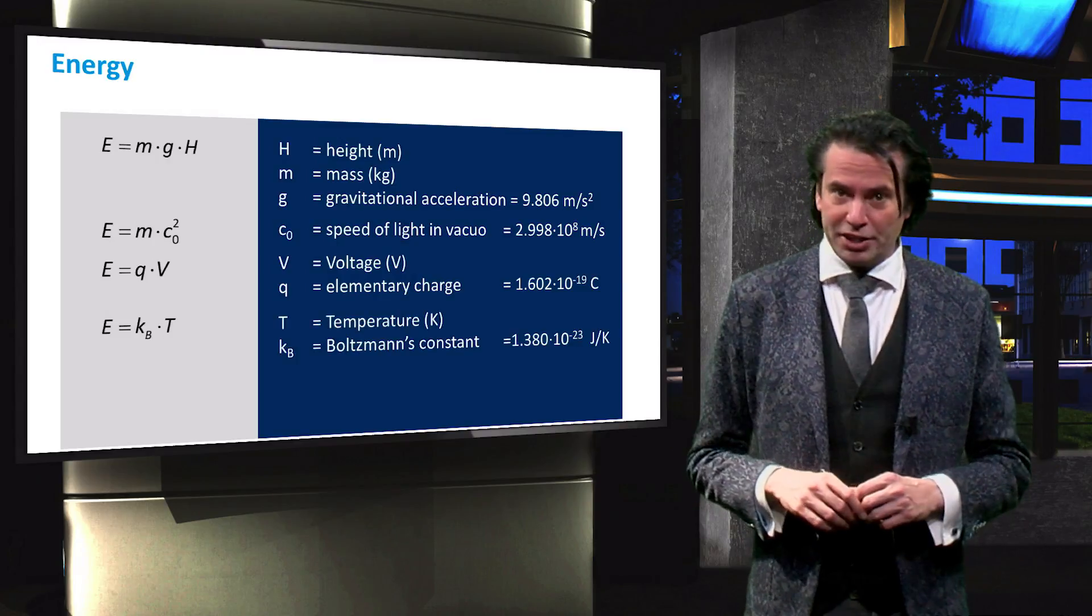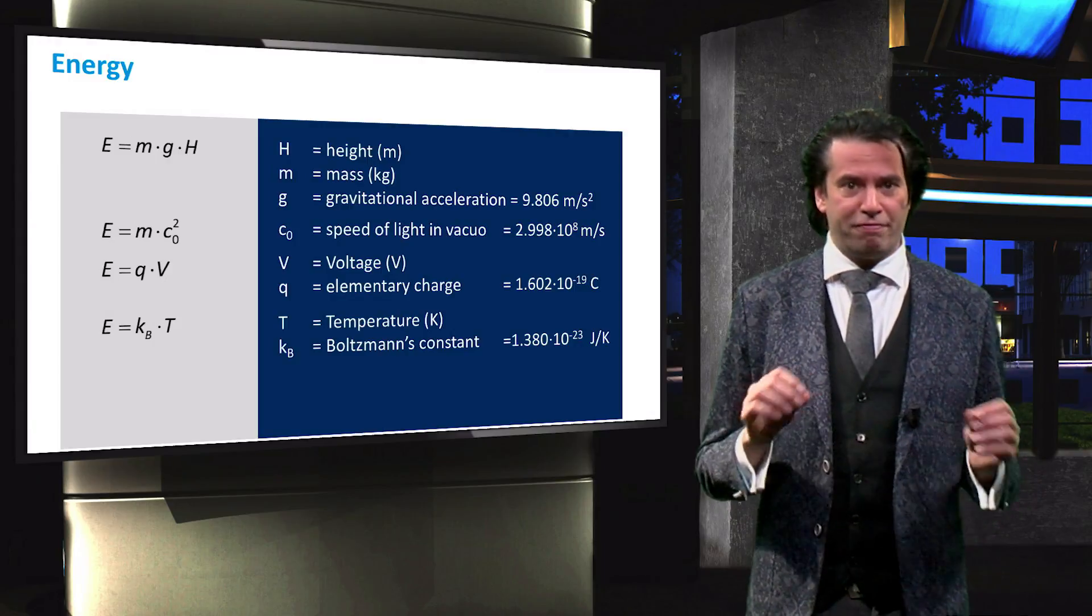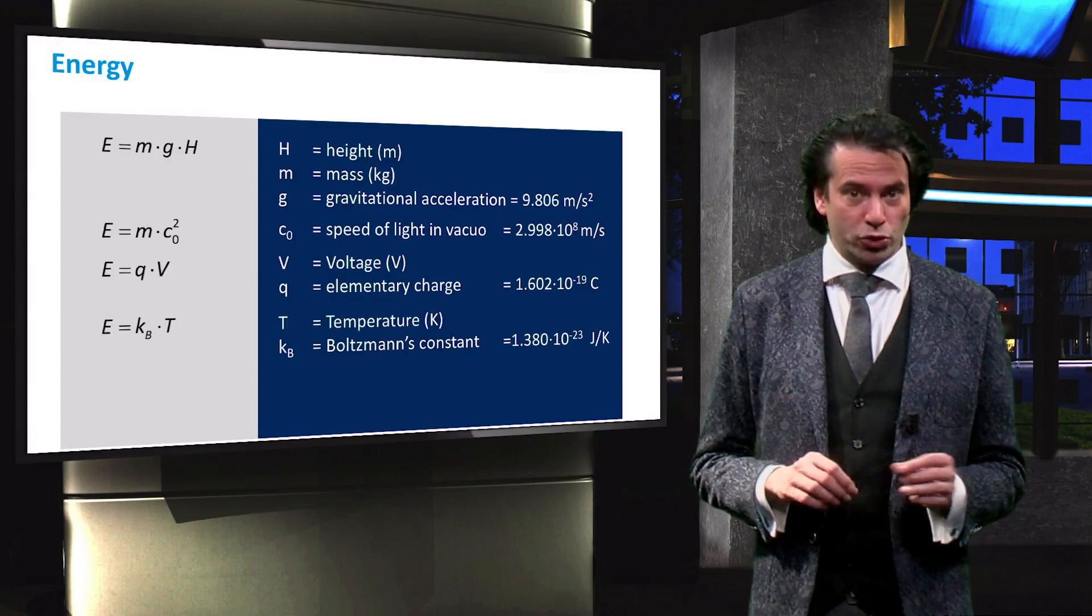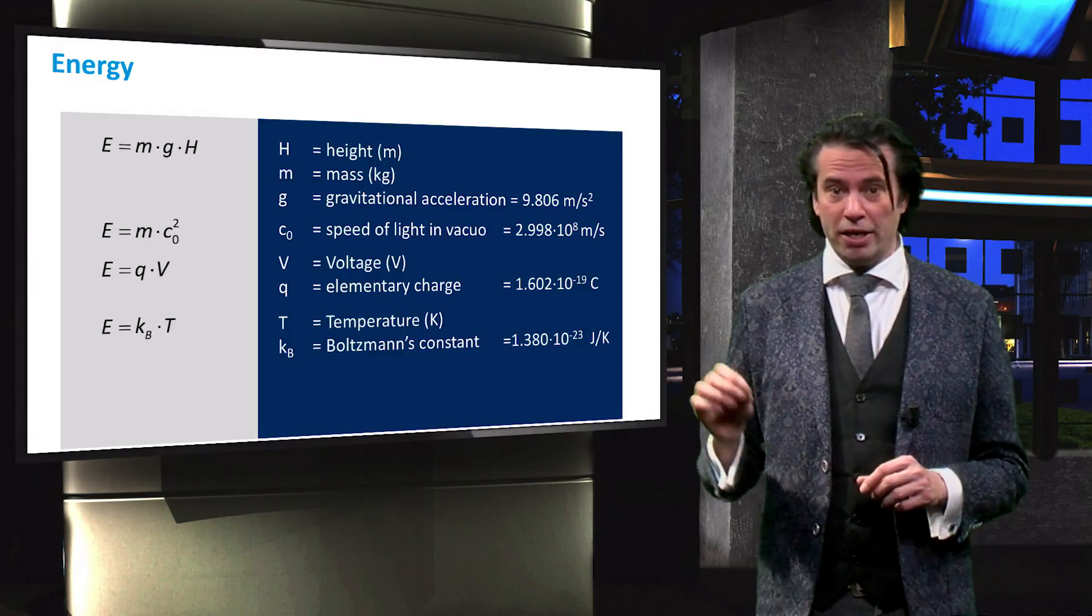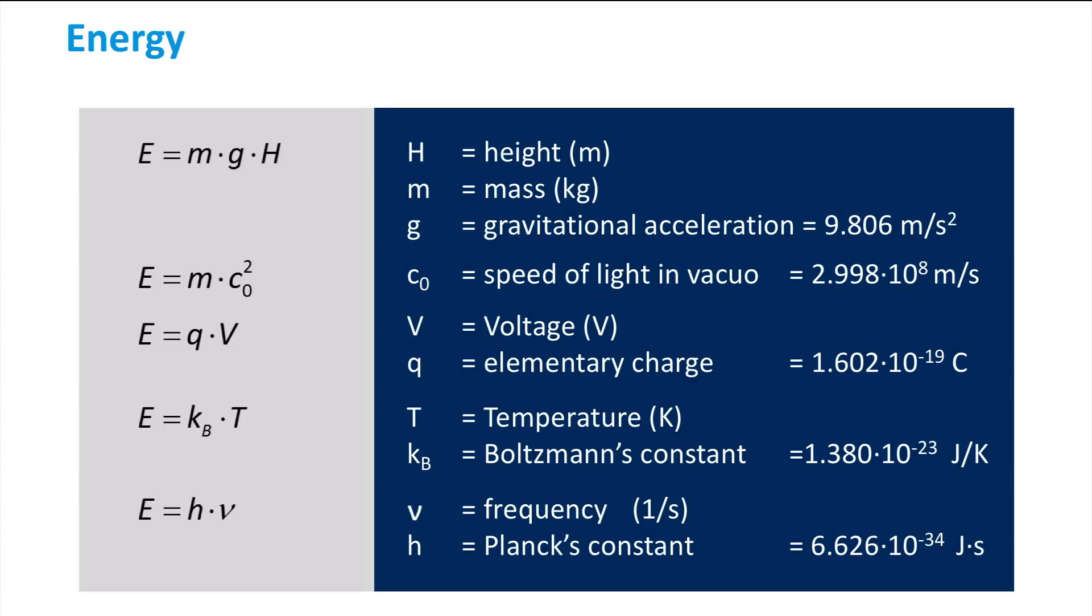The amount of thermal energy present in a temperature is defined using Boltzmann constant, denoted by kb. Finally, the discrete particles of energy contained in an electromagnetic radiation, like light, is a function of only its frequency, denoted by nu. Energy and frequency are related through Planck's constant, denoted by h. All these constants, and implicitly all these definitions of energy, play an important role in the field of photovoltaics.